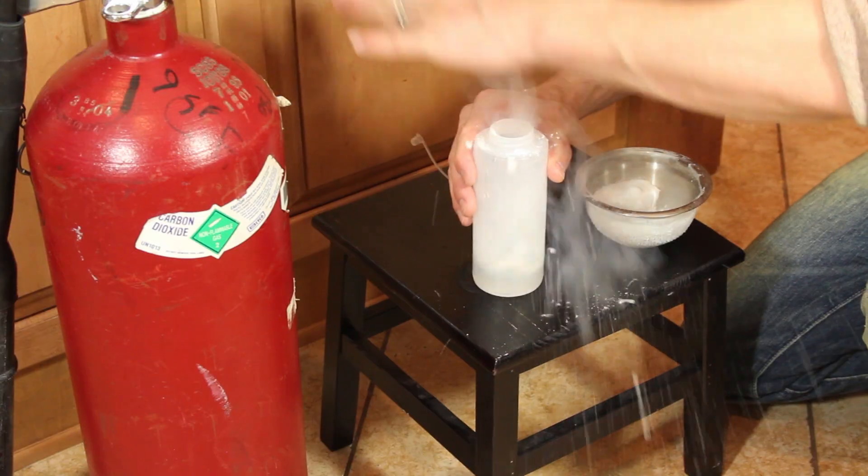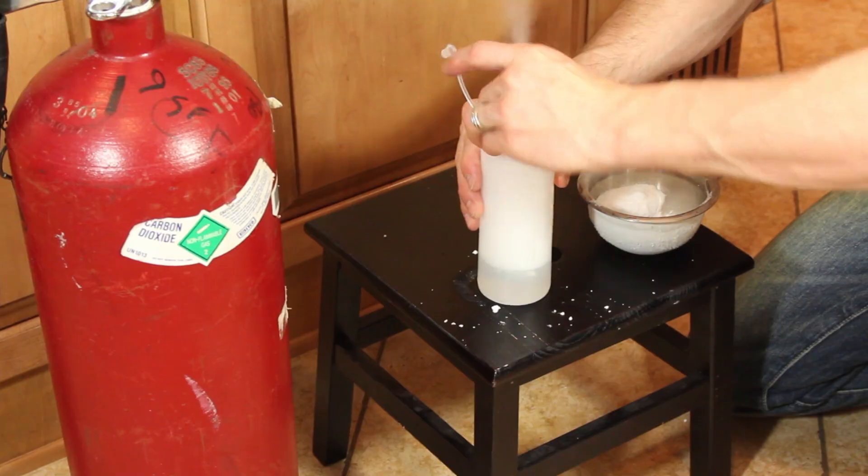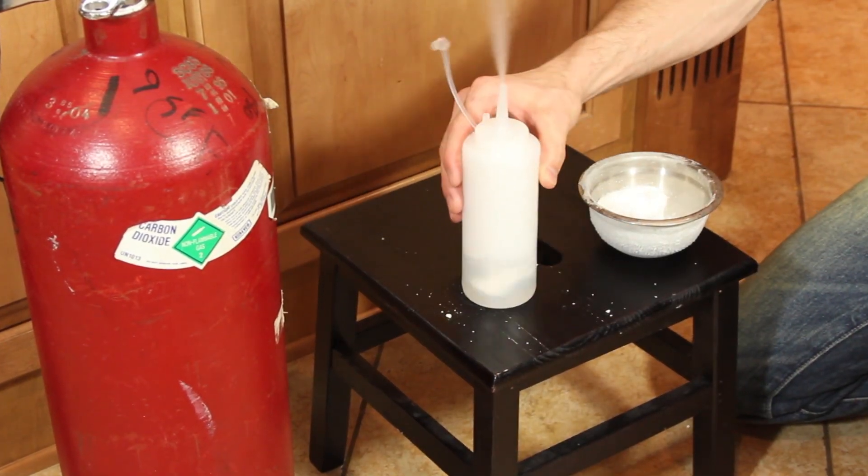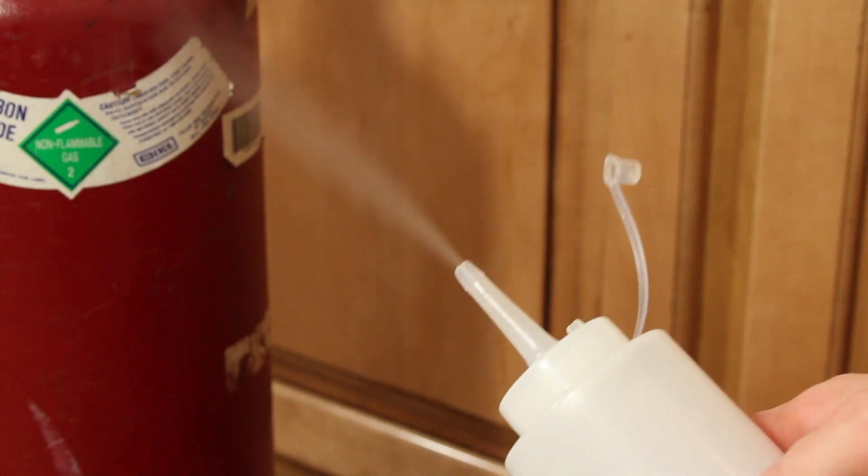If we add some dry ice to a container of warm water and screw on a lid with a small vent hole in it, we get a little CO2 geyser rocketing out of the top. Shaking it will speed up the reaction and increase it to a pressure that could possibly be used to drive a small motor.